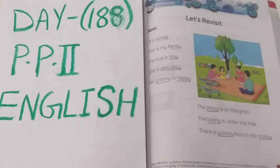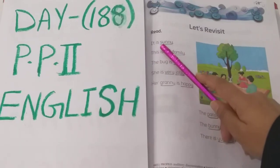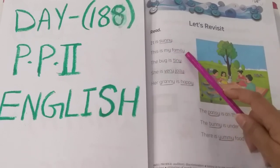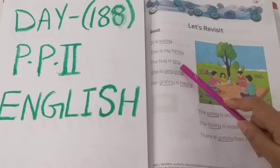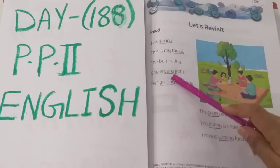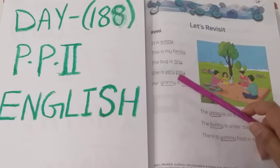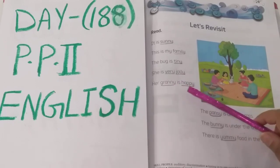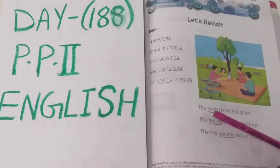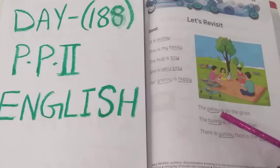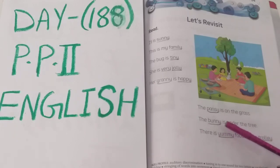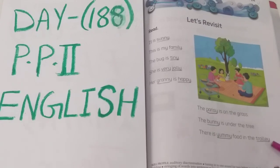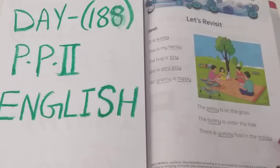So children, let me recap the Y words. S-U-N-N-Y, sunny. F-A-M-I-L-Y, family. T-I-N-Y, tiny. V-E-R-Y, very. J-O-L-L-Y, jolly. G-R-A-N-N-Y, granny. H-A-P-P-Y, happy. P-A-N-S-Y, pansy. B-U-N-N-Y, bunny. Y-U-M-M-Y, yummy. T-R-O-L-L-E-Y, trolley. These are the words with letter Y for which we are pronouncing as E sound. I hope you have understood. Thank you.